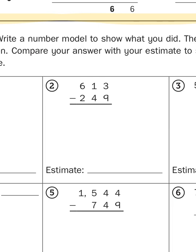613 minus 249. If I round that to the nearest hundreds, here's what my estimate would look like. 613 would round down to 600, as would 249. It would round down to 200. It's almost to 250, but not quite. So, 600 minus 200, of course, is going to give me 400.